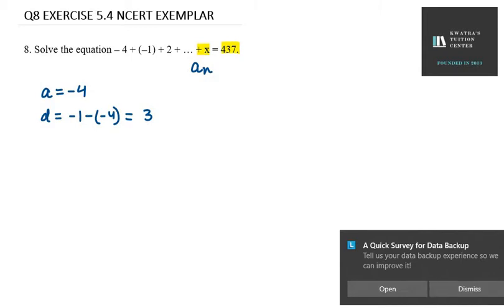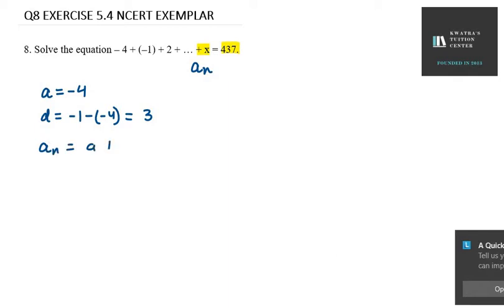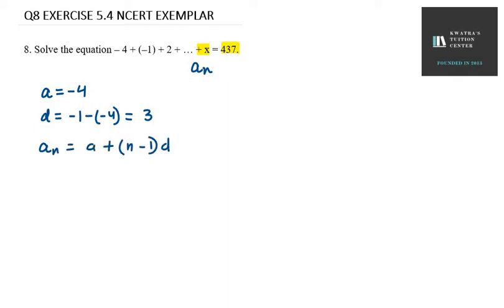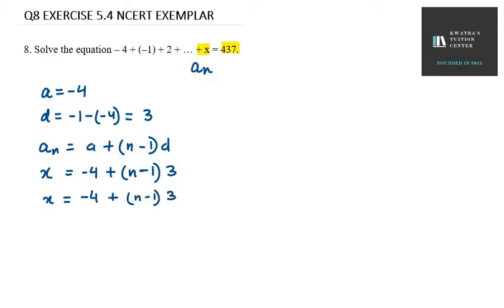We need to find the value of an. So first we write: an equals a plus (n minus 1)d. We replace an with x, a with minus 4, and d with 3. So we get: x equals minus 4 plus (n minus 1) into 3. Taking minus 4 to the left-hand side, we get (x plus 4) over 3 equals n minus 1.